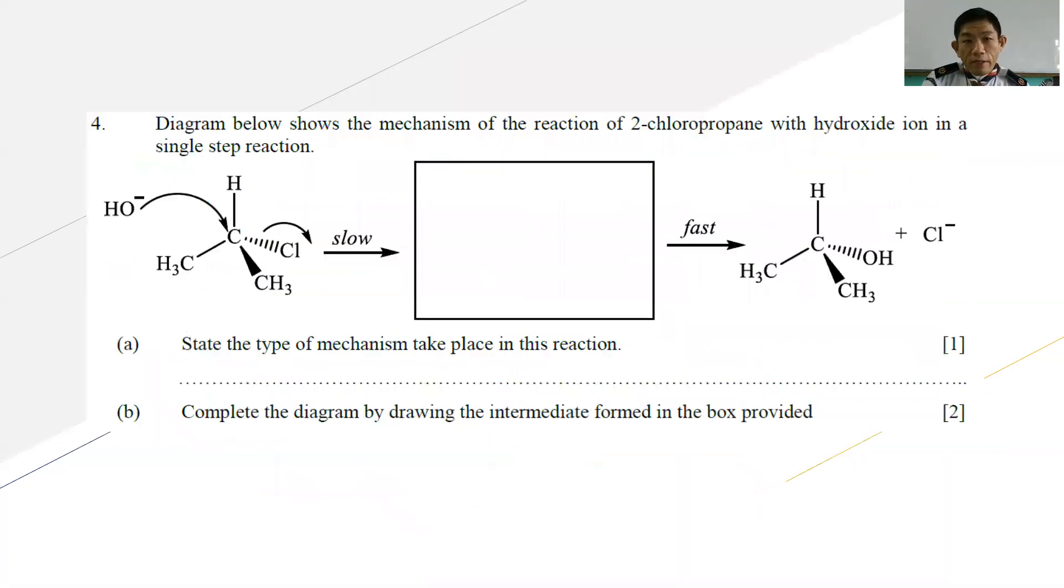Question number four: The diagram below shows the mechanism of 2-chloropropane with hydroxide in a single-step reaction. You have OH- attack the carbon, and the C-Cl bond broken. Slow, you have a transition state, and then fast, you have the product of propan-2-ol. Part A: State the type of mechanism that takes place in this reaction. This is obviously SN2 mechanism. The question asks straight away the type of mechanism, so you must answer SN1 or SN2. Can I answer as nucleophilic substitution reaction? In this case, the question already states the type of reaction, so you must specifically state either SN1 or SN2. Nucleophilic substitution is not enough for your answer.